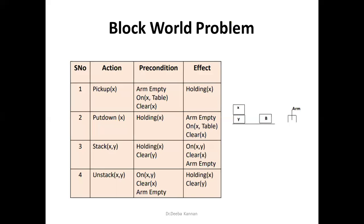There are four basic operations allowed in a block world problem: put a block on the table, pick up a block from the table, stack a block on top of another, and unstack. For the pickup action — picking up block X from the table — the preconditions are: the arm head must be empty, X must be on the table, and there must be nothing on top of X.